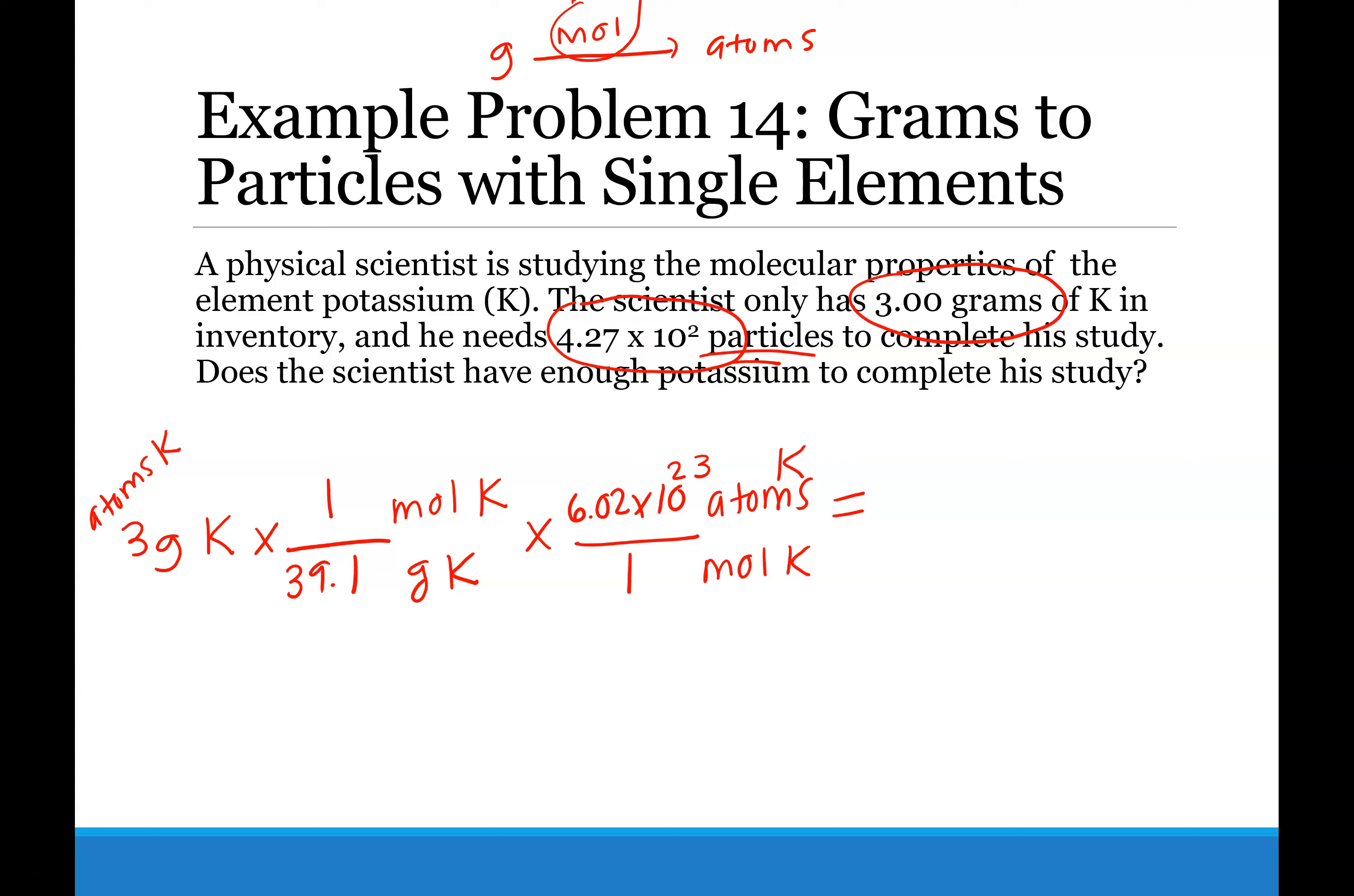So in your calculator, you should type 3 divided by 39.1 times 6.02 times 10 to the 23rd. And so your final answer will be 4.618, so 4.62 times 10 to the 22 atoms of potassium. And so 4.27 times 10 to the 2nd in regular notation, not in scientific notation,